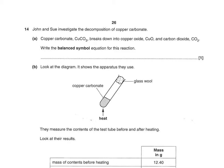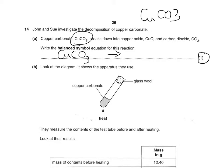John and Sue investigate the decomposition of copper carbonate. Copper carbonate breaks down to copper oxide and carbon dioxide. Write the balanced symbol equation. Copper carbonate is CuCO₃ on the left. On the right: CuO plus CO₂. Make sure the size of the symbols and subscript numbers are written correctly or you won't get the marks. There are no marks for balancing because it's already balanced, and we know that because it's only worth one mark.